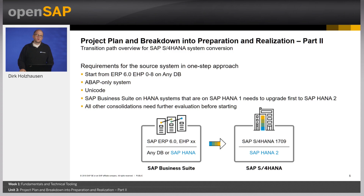The source system must be on ERP 6.0. Only ABAP systems can directly be converted to S4HANA — if there is a Java stack in place, the source system must be split first. The source system must already be on Unicode, because S4HANA only supports Unicode. If the system is already running on the HANA database, it needs to be on HANA version 2. If the direct one-step approach is not possible, then a two-step approach needs to be considered. In a nutshell, there is always a way to convert to SAP S4HANA, even for systems older than ERP 6.0. But the ways to convert are different depending on the source system, so the situation must be checked as part of the project preparation phase.